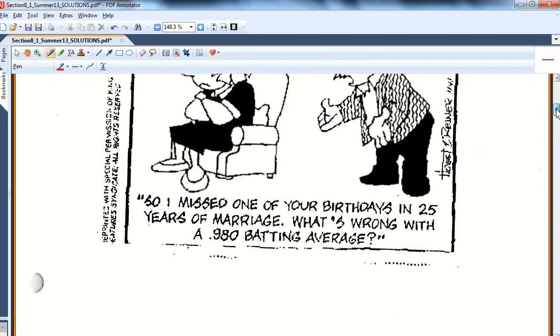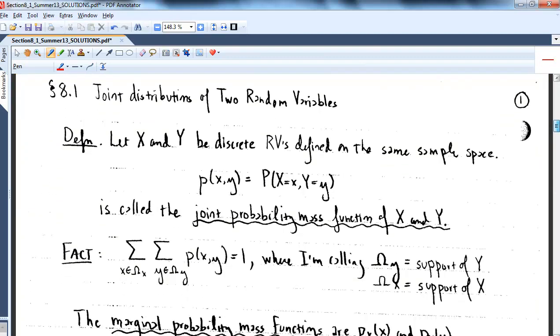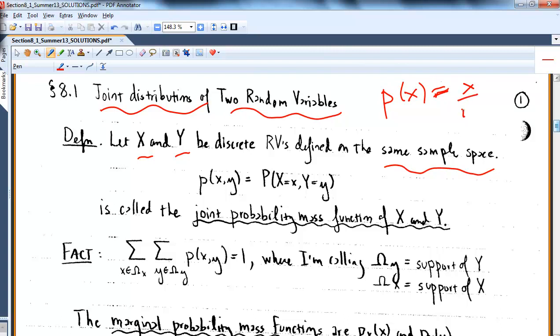We are doing really well. We only have Chapter 8, 11, a little bit of 10, so we're in good shape. Section 8.1 is called joint distributions of two random variables, and we'll start discrete first. So I actually hand wrote this. Let X and Y be discrete random variables defined on the same sample space. We're going to say P of X, Y is a joint probability mass function.